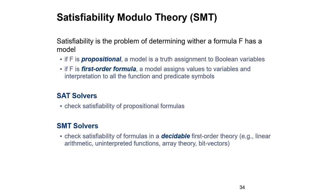Bit vectors become very important when reasoning about memory models and heap of programs. You need to look at how things are actually represented in bit vectors rather than integers, because normal integers in the theory don't have a 32-bit limit. Integers in the SMT solver are not limited to some bit number, so they might behave differently — for example, with normal integers you'd never have overflow or underflow, whereas with bit vectors you can.